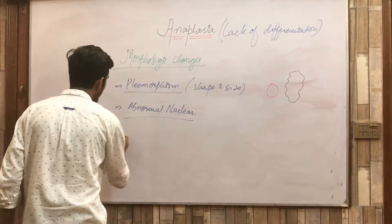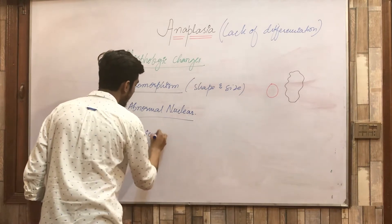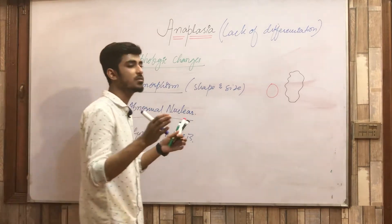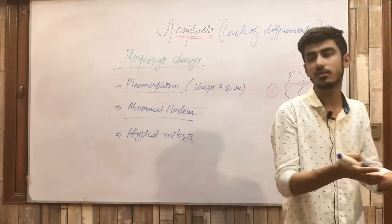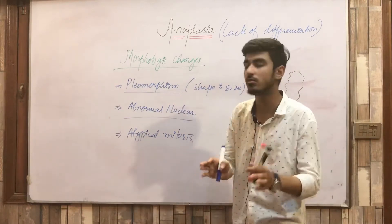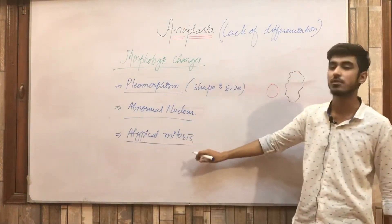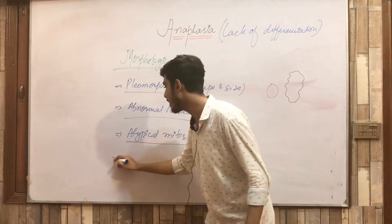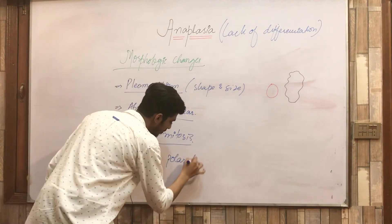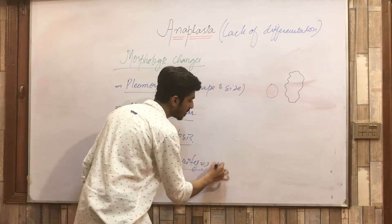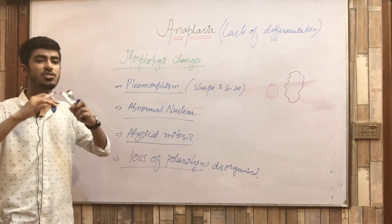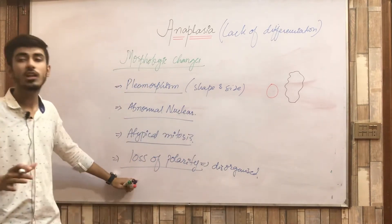The third morphologic change is atypical mitosis. Any mitosis that deviates from normal mitosis is called atypical mitosis — meaning if the normal steps of mitosis are not followed or any change occurs in those steps, that is atypical mitosis. This is a feature of anaplastic cells. The fourth change is loss of polarity, due to which cells grow in a disorganized fashion, in sheets or masses.